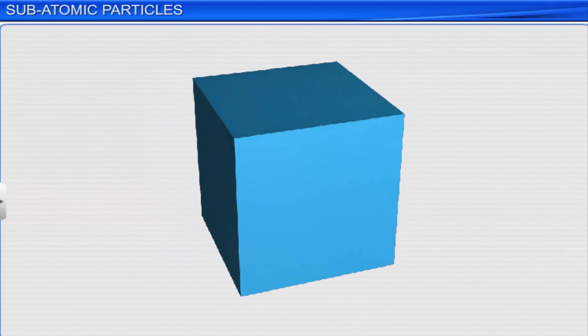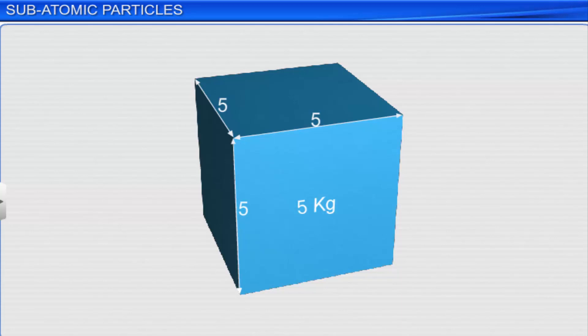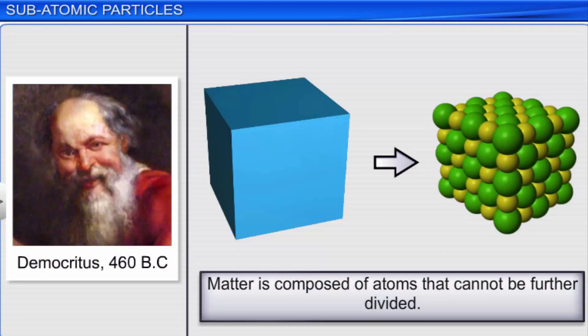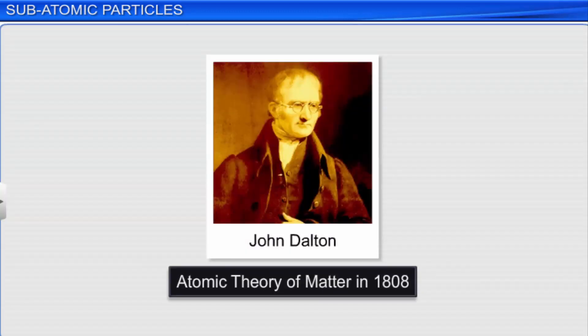Any substance that has mass and occupies space is called matter. It is made up of small particles called atoms that cannot be further divided. This idea was first proposed by the Greek philosopher Democritus back in 460 BC. However, due to the lack of scientific evidence, Democritus's ideas were considered mere speculations and ignored for 2000 years until John Dalton proposed the atomic theory of matter in 1808.